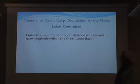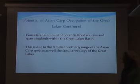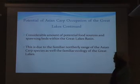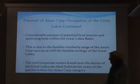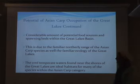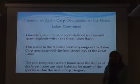There is a considerable amount of potential food sources and spawning beds within the Great Lakes basin. This is due to the familiar ecological range of the Asian carp species and the familiar ecology of the Great Lakes. The cool temperate waters found near the shores of the Great Lakes are ideal habitats for many of the species within the Asian carp category.